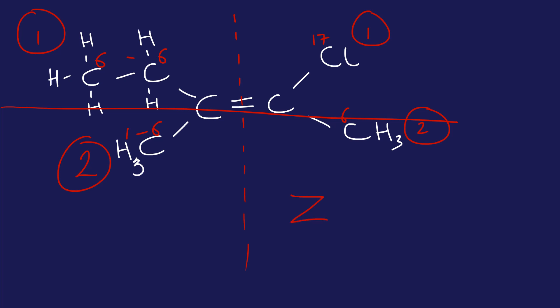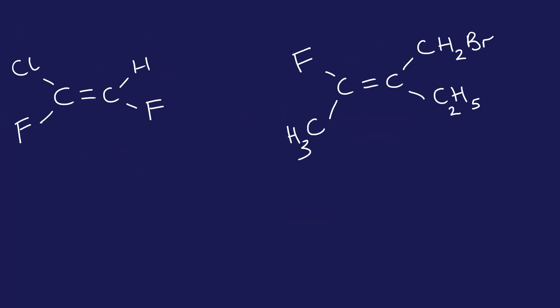Okay, I'm going to suggest you pause the video now and try to do these two yourself. Identify them as E or Z isomers applying our CIP rules, and when you're ready, unpause the video and see if you got them right.